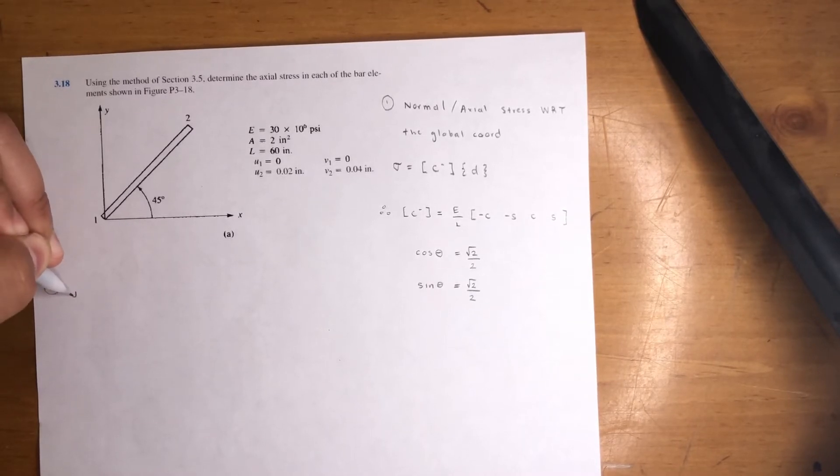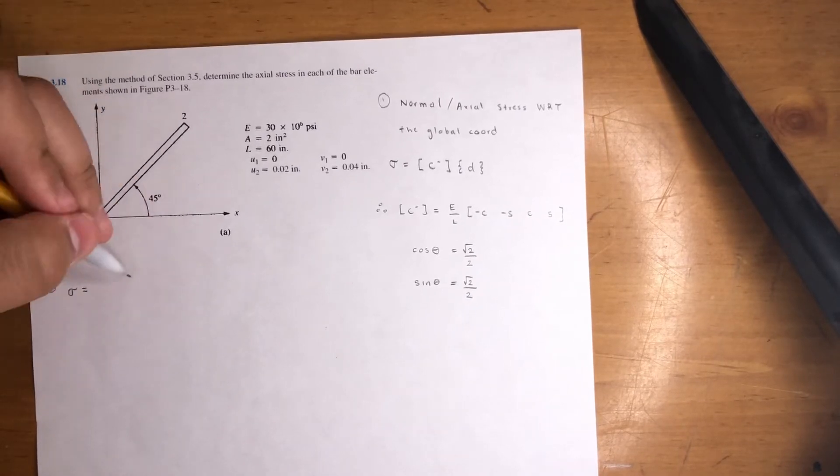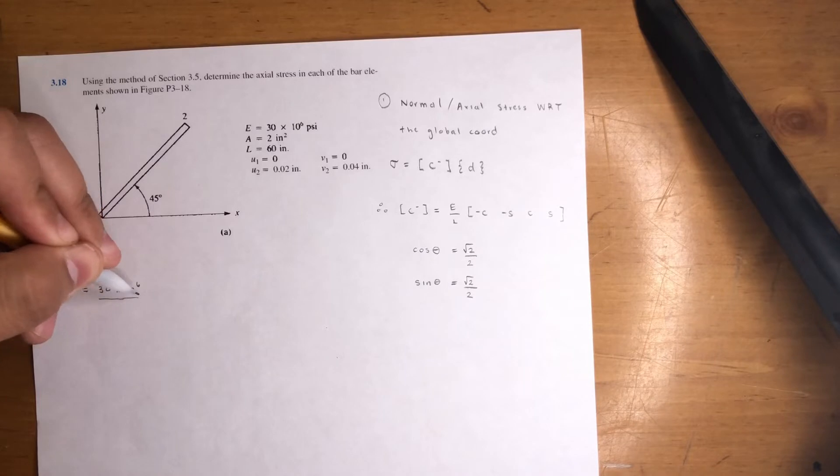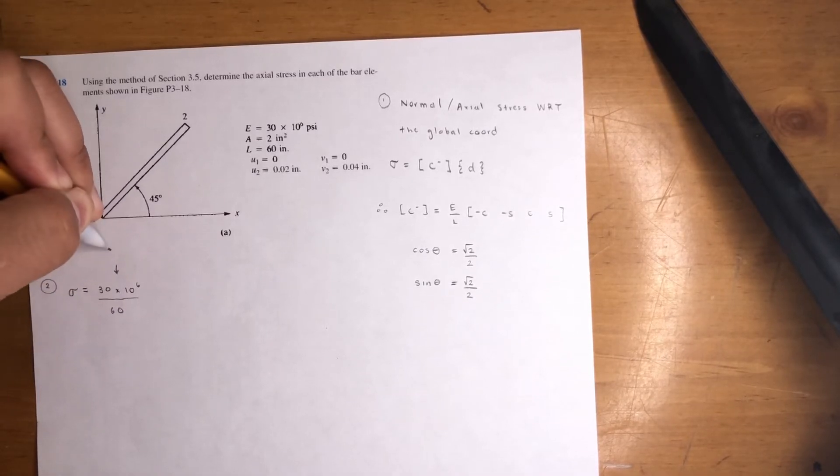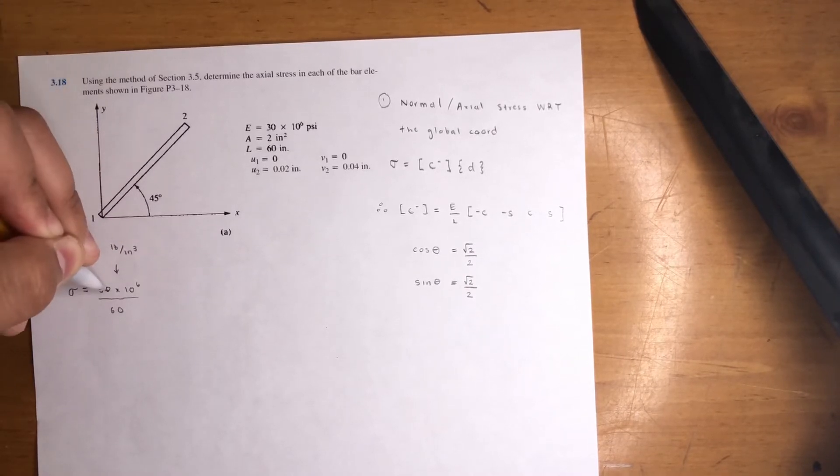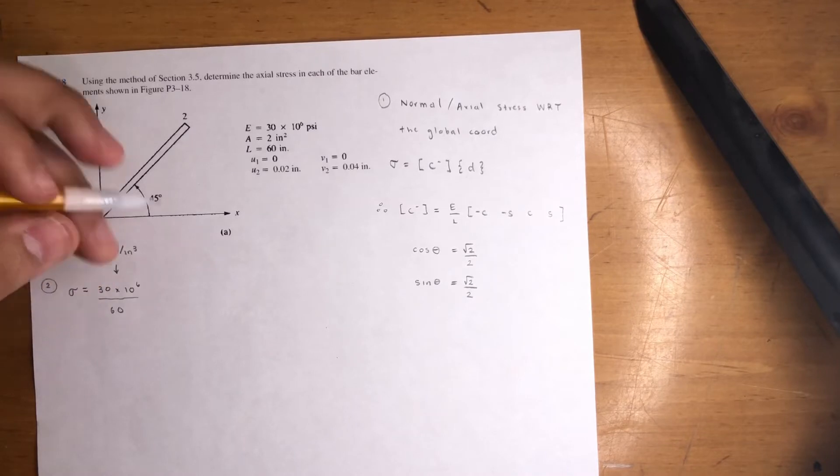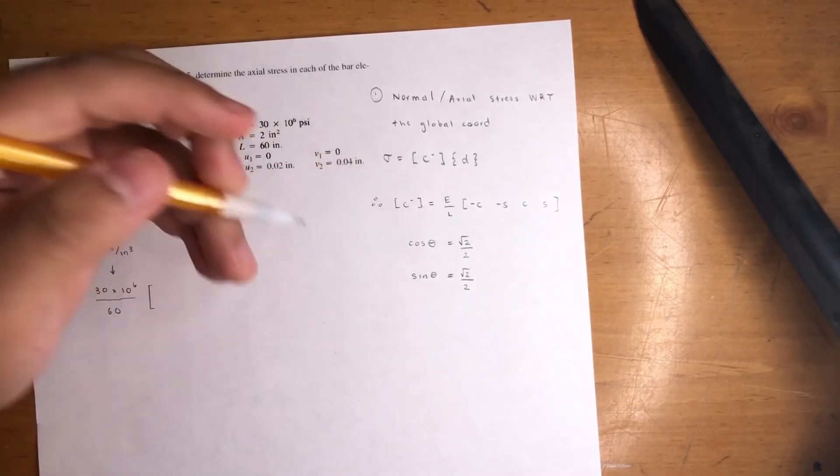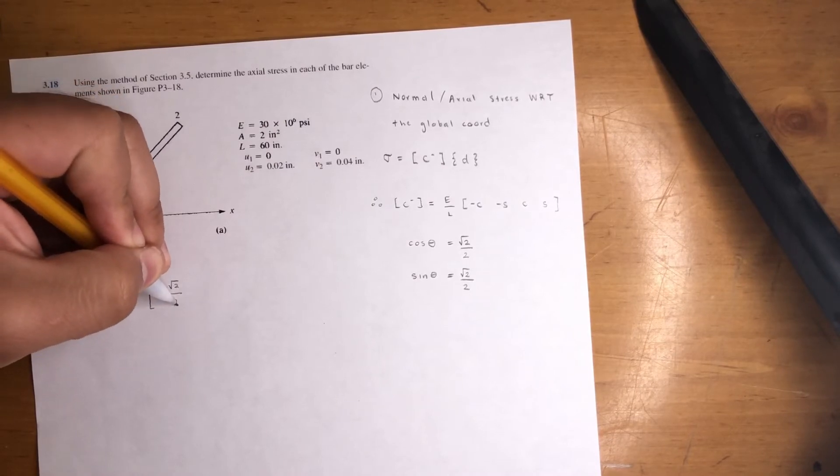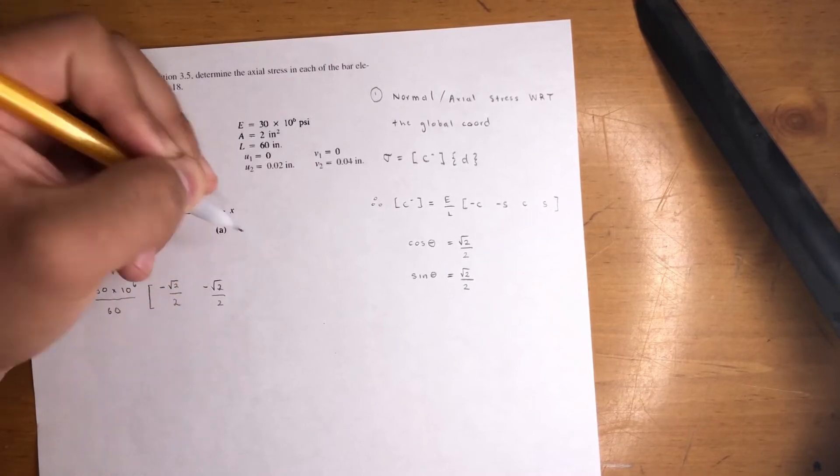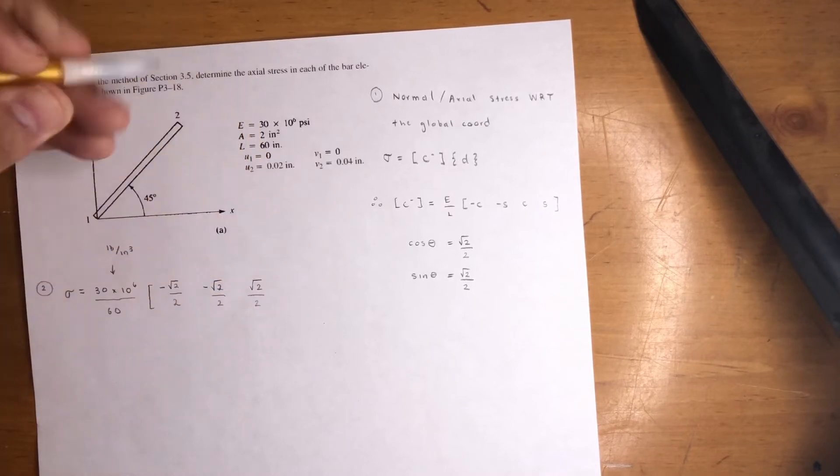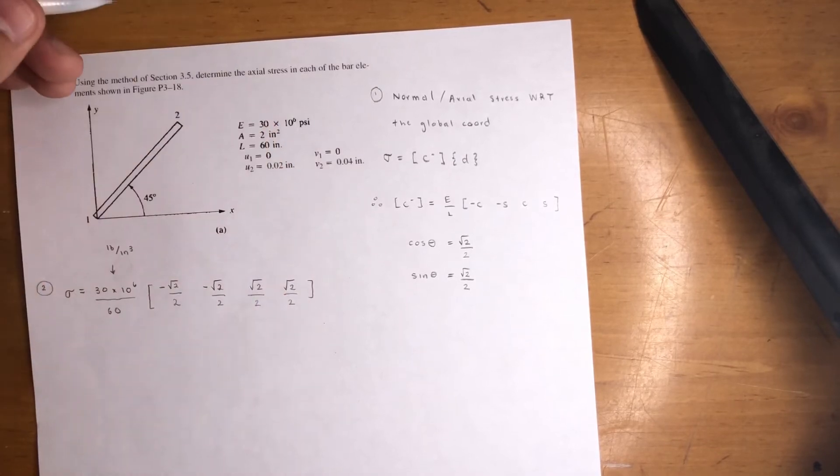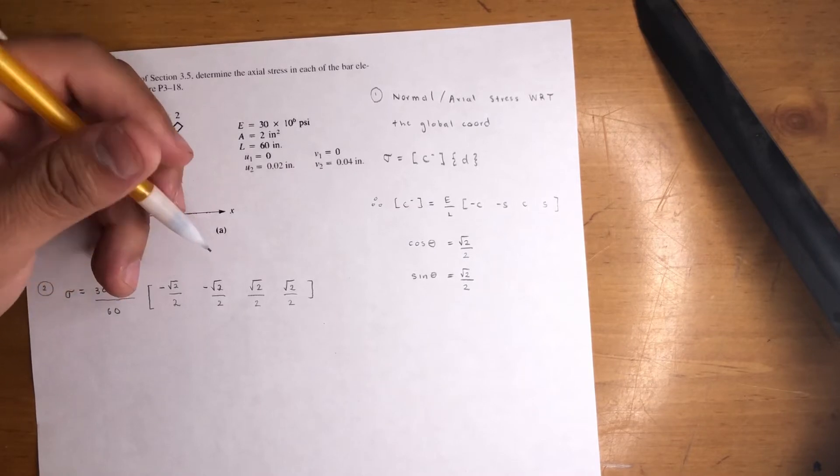Step 2. We got σ equals E over L, which is 30×10^6, that's in pound per inch squared, divided by 60 inches. So that means this unit is going to be pound per inch cubed—PSI divided by inch again. Get the matrix going. That's going to be negative cosine, which is -√2/2, negative sine which is -√2/2, positive cosine and positive sine. It's with respect to the x-axis. That's the angle you always use. And that is the matrix. This one is unitless, there's no units—it's just a cosine angle.